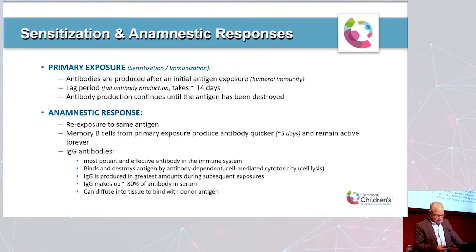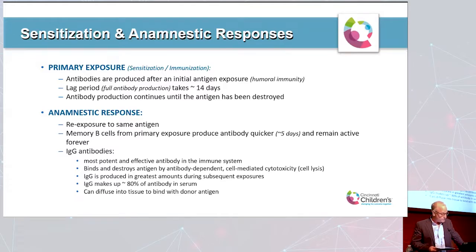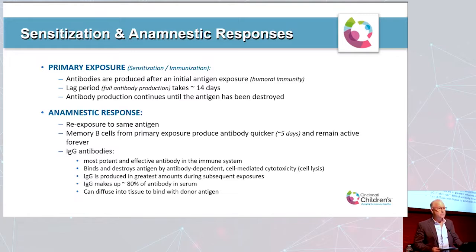Antibodies are protein molecules produced by B cells in response to an initial antigen exposure. The lag period — the time it takes to develop full antibody production — takes about 14 days, and antibody production continues until the antigen is destroyed. The follow-up or secondary exposure, also known as the anamnestic response, is a re-exposure to the same antigen where memory B cells from the primary exposure produce the antibody much quicker — in five days instead of 14 — and they remain active forever. IgG antibodies are the most potent and effective antibody in the immune system, making up 80% of the antibody in serum.